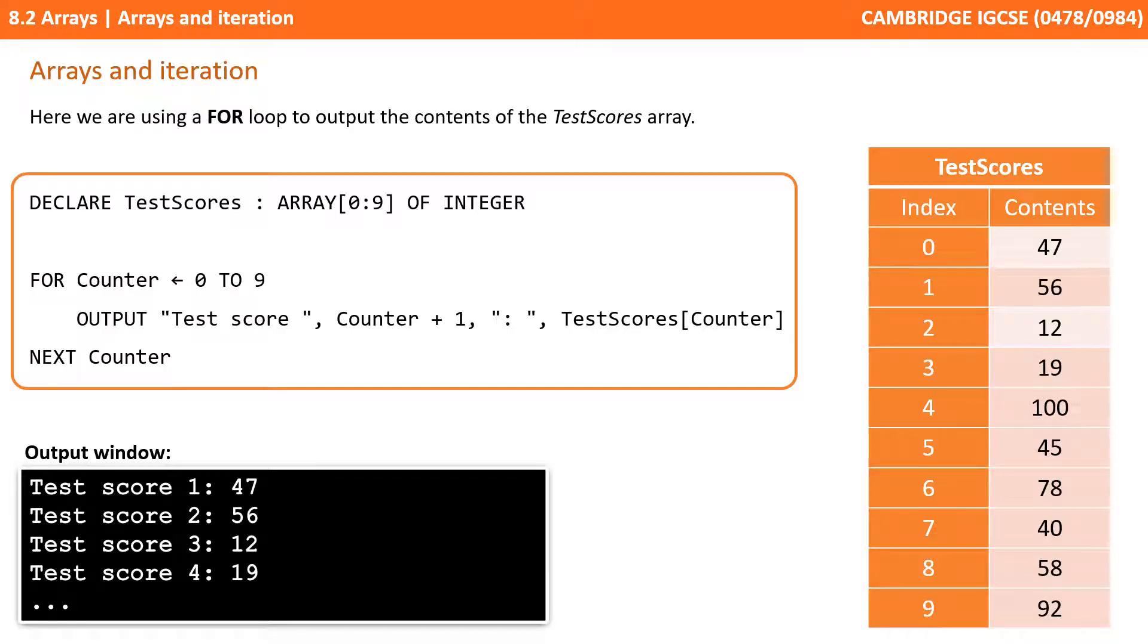This next example shows how we're using a for loop to output the contents of the test score array. The entire test score array is now full. Again we're using a fixed for loop, a counter-controlled for loop from 0 to 9. And then we've got an output line that's outputting the string test score plus the value of the counter plus one, followed by the contents of the test score table. We've got the example output at the bottom of the screen.